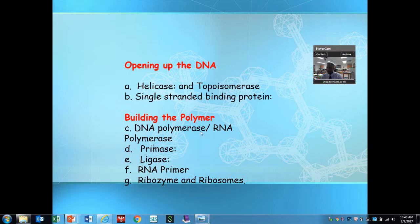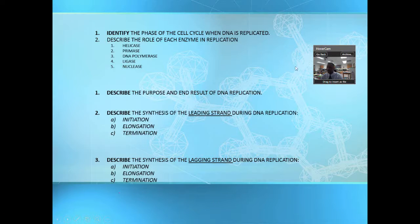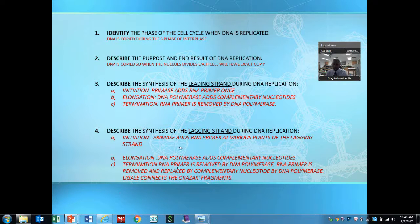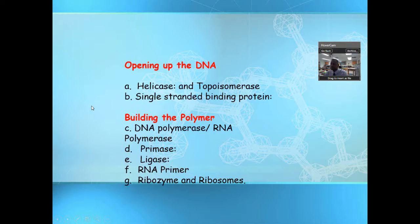Here are some of the various enzymes — you can pause for a second and review these. For DNA replication, you're going to have helicase and topoisomerase — they're going to open up the DNA molecule. Then you have single-stranded binding proteins that stabilize it so you can add in new nucleotides of DNA or RNA.